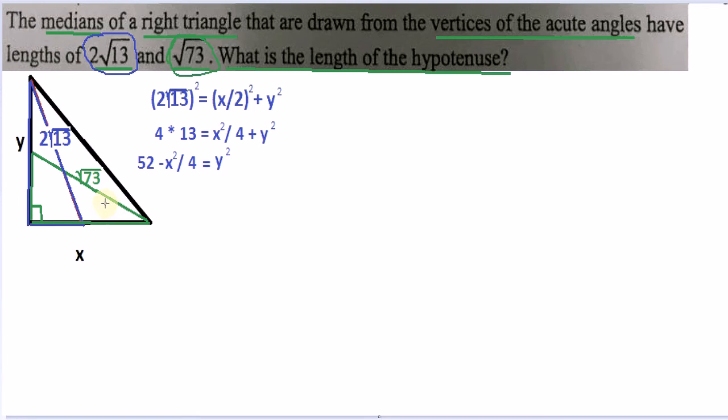Now let's look at our other triangle, the green one here. We can use Pythagorean theorems again with that, because we have x on the bottom. One half of y here, and then the square root of 73 for the hypotenuse.